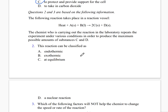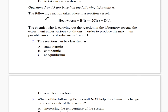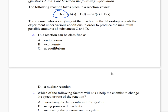Questions 2 and 3 are based on the following information. The following reaction takes place in a reaction vessel: heat plus A (solid) plus B (liquid) converts to two C (solid) and D (solid). The chemist repeats the experiment under various conditions in order to produce the maximum possible amounts of substances C and D.